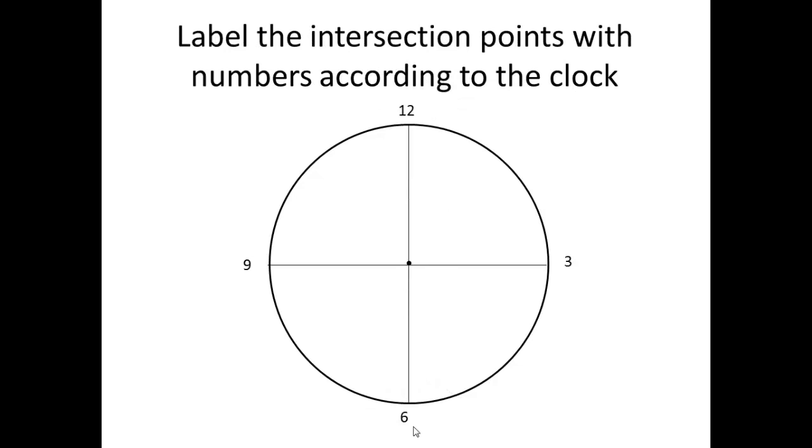Label the intersection points on the edge of your circle with numbers according to the clock. So on top here is where 12 o'clock is, over here would be 3 o'clock, down here 6 o'clock, and to the left 9 o'clock. We will fill in the rest of the numbers next.